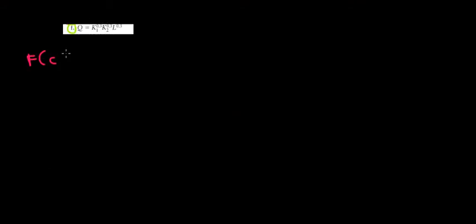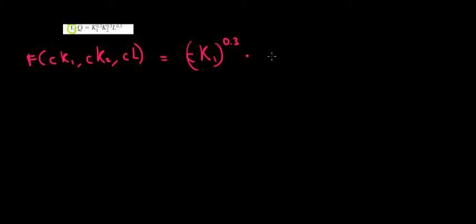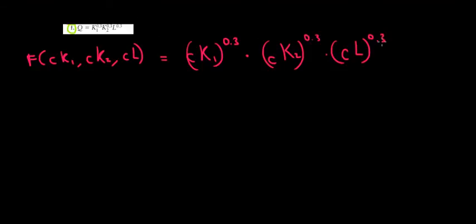This is the function. Let's see what happens if we add proportions to the inputs. The function after we add the proportions will have CK1, CK2, and CL. We add the proportions to all inputs because we apparently have three inputs now. That's going to give us C times K1 to the power of 0.3, multiplied with C times K2 to the power of 0.3, multiplied with CL to the power of 0.3.